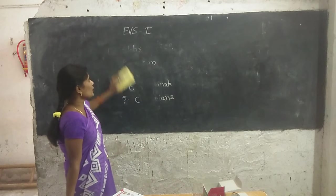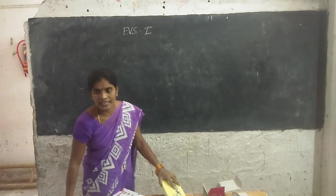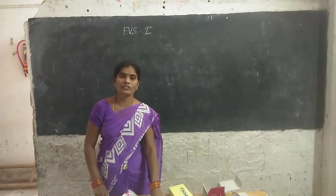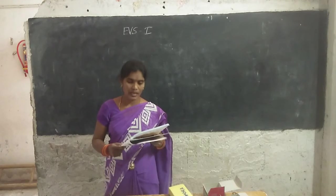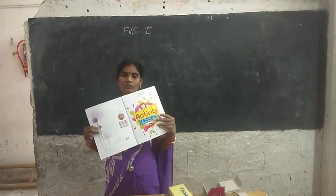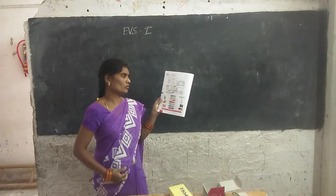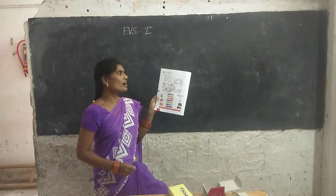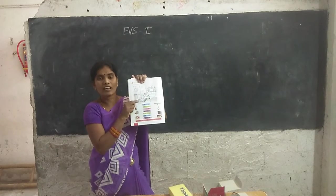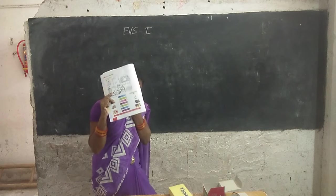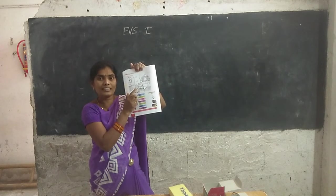Now take your Activity Book, Volume 2, page number 52. Here, colour the picture. You have to colour this picture.